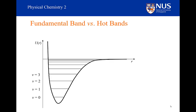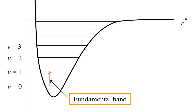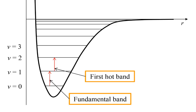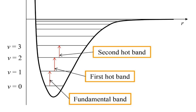The reason why those intensities are getting smaller for the overtones is because the transition moments are getting smaller. I want to now look at hot bands, which also have smaller intensities but for an entirely different reason. Here is our familiar fundamental band as we go from V equals 0 to V equals 1. However, we could have a transition from V equals 1 to V equals 2 — this would be the first hot band. We could also have a transition from V equals 2 to V equals 3, and this would be the second hot band.